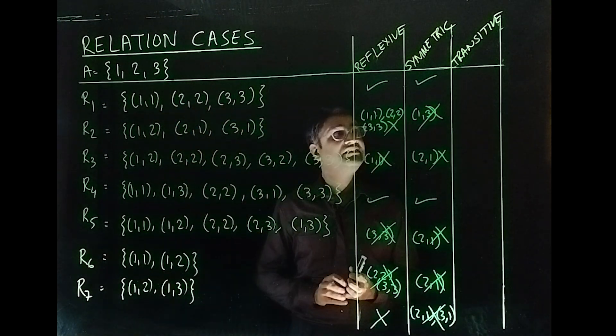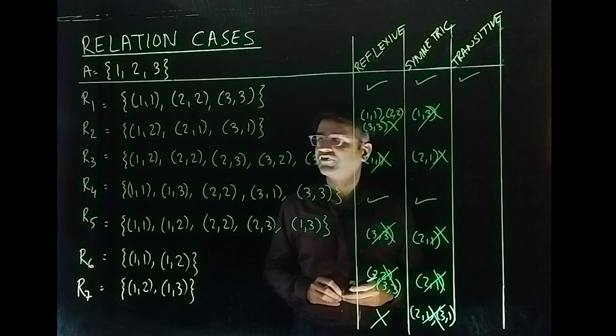(1,1), (2,2), (3,3). This is transitive. Yeah, this is actually transitive.